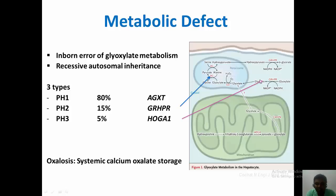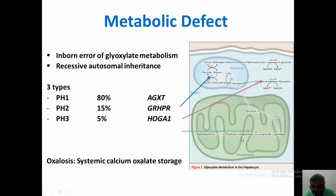A very rare variant, primary hyperoxaluria type 3 (PH3), consists of around five percent of total primary hyperoxaluria and occurs due to deficiency of HOGA1 — hydroxy oxoglutarate aminotransferase. These different types all lead to primary hyperoxaluria, causing accumulation of oxalate in the system, known as systemic calcium oxalosis.